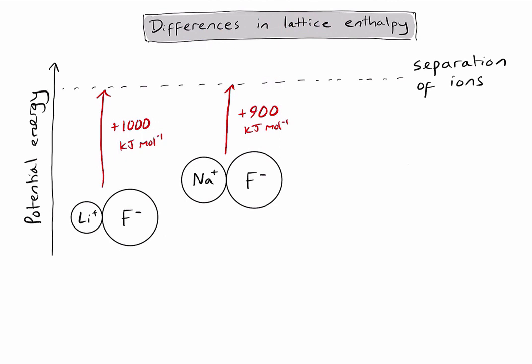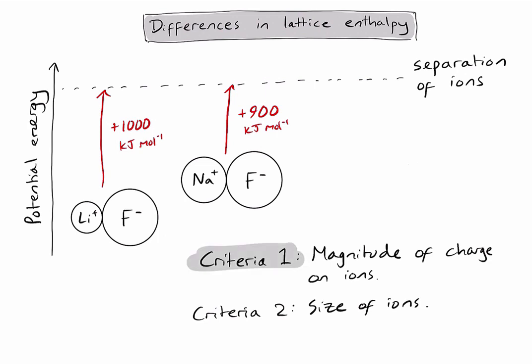Well, there are two criteria we need to consider here. The first is the magnitude of charge on my ions, and the second criteria is the size of the ions. Let's first consider criteria one. In this case, if I look at the magnitude of charge on each ion in lithium fluoride and sodium fluoride, we can see they're identical. The lithium and the sodium have one positive charge and the fluorides have one negative charge. So in this example, the magnitude of charge is not going to be a factor.